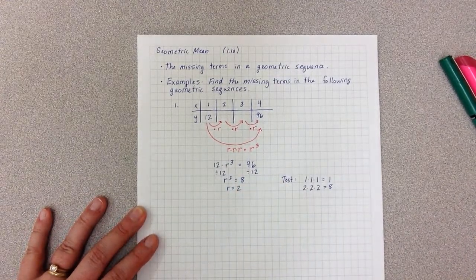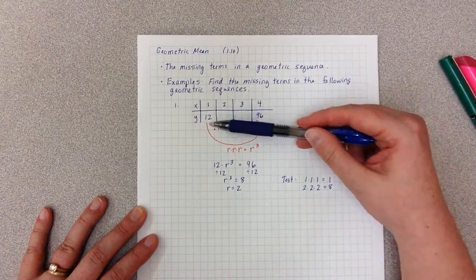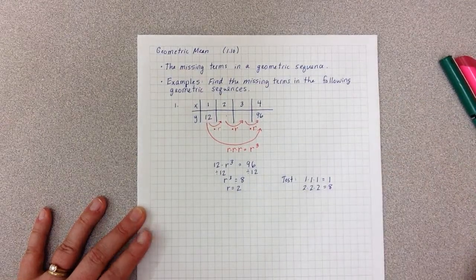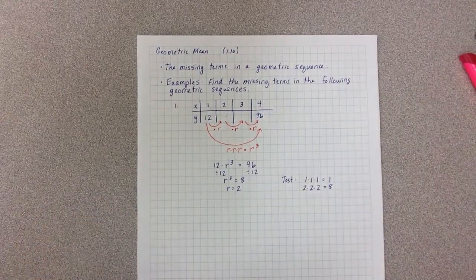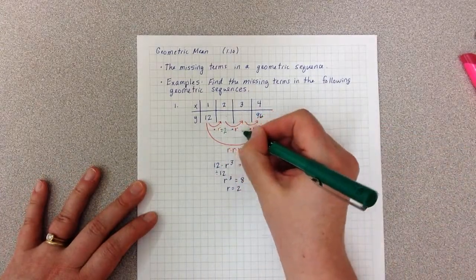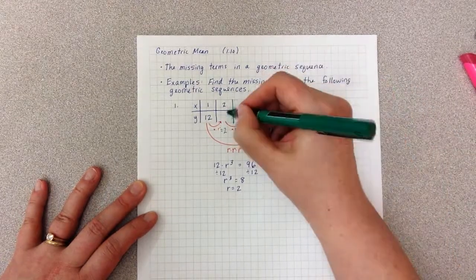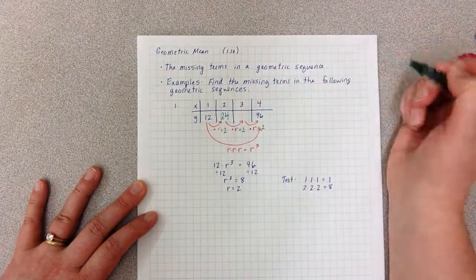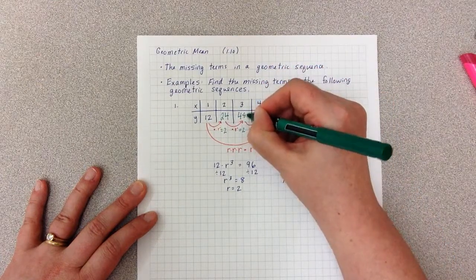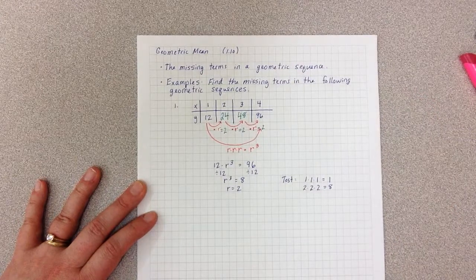Now I can go back and fill in the table by multiplying each term by 2. So 12 times 2 is 24, 24 times 2 is 48, and 48 times 2 is 96.